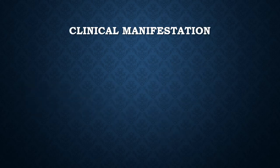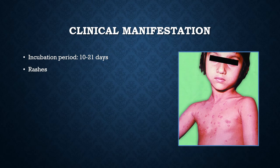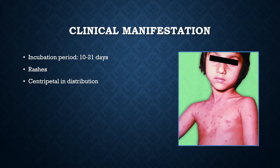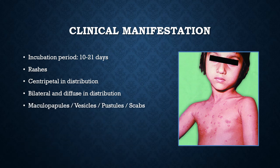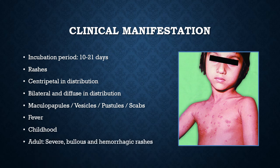The incubation period is about 10 to 21 days, mostly 2 to 3 weeks. Chickenpox rashes are vesicular with centripetal distribution, usually starting on the face and trunk, then spreading rapidly to involve flexor surfaces while sparing the distal limbs. They are bilateral and diffuse, appearing in multiple crops. Lesions at various stages — macules, papules, vesicles, pustules, and scabs — can be found in one area at the same time. Fever appears with each crop of rashes.